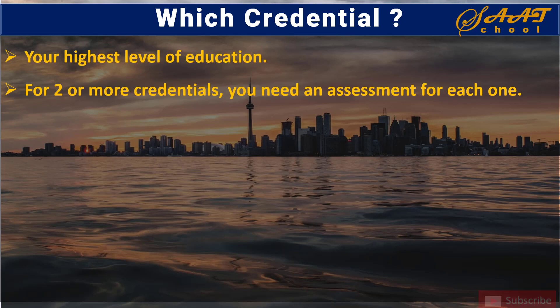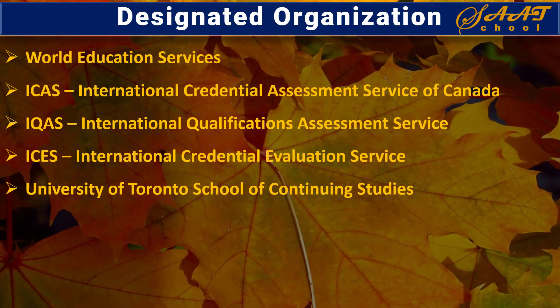You must get an assessment from an organization designated by Immigration, Refugees and Citizenship Canada. These are the designated organizations: World Education Services, International Credential Assessment Service of Canada, International Qualifications Assessment Service, International Credential Evaluation Service, and University of Toronto School of Continuing Studies. You can choose any one from these organizations. Once you choose a designated organization, they will let you know how to submit your documents. Remember, processing times and costs may vary by organization.